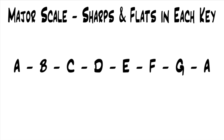To build a major scale, you take any note and put the notes in order along the musical alphabet. For example, if I take an A note, I go A, B, C, D, E, F, G, and then I'm back to A because the musical alphabet stops at G. So that's the order of my notes, just in alphabetical order. But now I just have to find out where the sharps or flats lie in this key, and that's what we're going to talk about in this lesson.